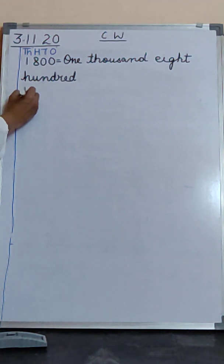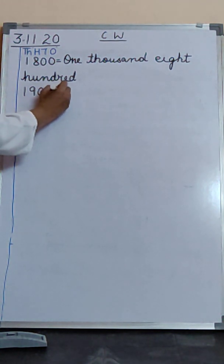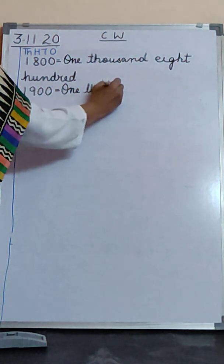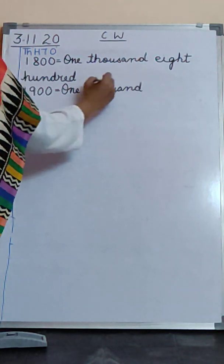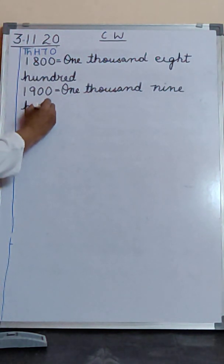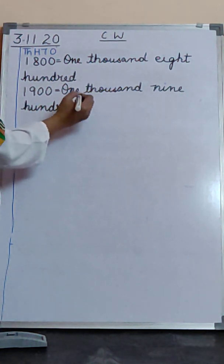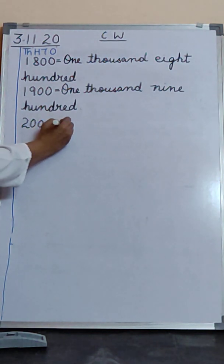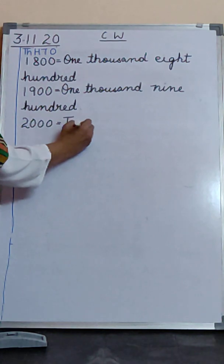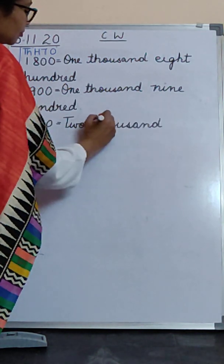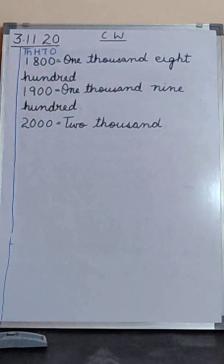And write one thousand nine hundred. T-H-O-U-S-A-N-D, one thousand, nine hundred. And then we write two thousand. Two thousand.